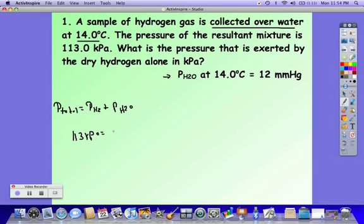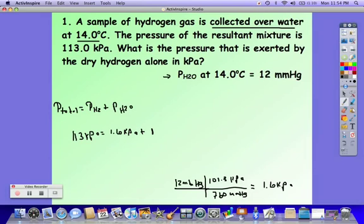So the total pressure was 113 kPa. We want our answer in kPa, so we're going to convert the 12 millimeters of mercury to kPa. There's 760 millimeters of mercury in 101.3 kPa. Multiplying and dividing that, we get 1.6 kPa. So now we can subtract, and we can get our pressure of hydrogen, which is 111.4 kPa.